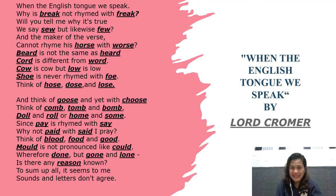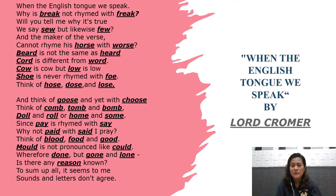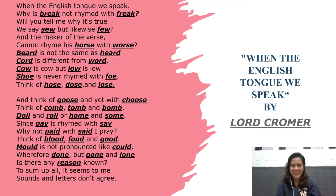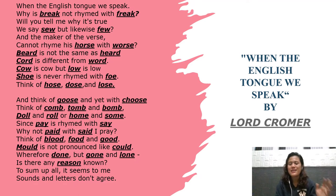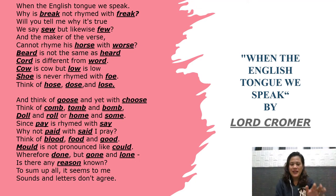Okay, so let's go back to the poem by Lord Cromer and go through each word one by one to see where we went wrong. The first one is 'break' — you already know that. Next is 'freak' — you know that too. Then 'sew' — siguro narinig ninyo kanina, it's 'sew,' not 'sue.' It's not 'sewing machine,' it's 'sewing machine.' And likewise 'few.'